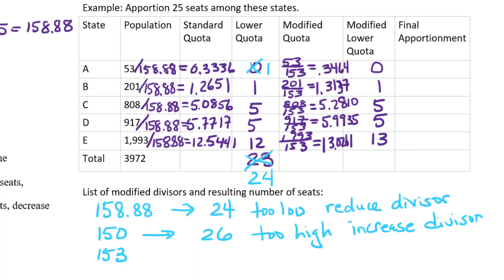Once again, I have to at least give one seat to state A. So adding up, finding the sum of the lower quotas, we're going to have 25. 153 divisor was just right.